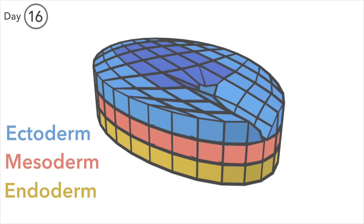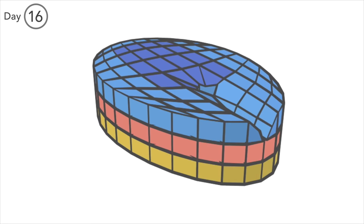Epiblast cells differentiate into ectoderm, the third and most superior germ cell layer.